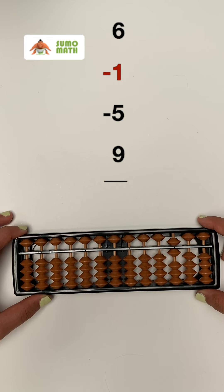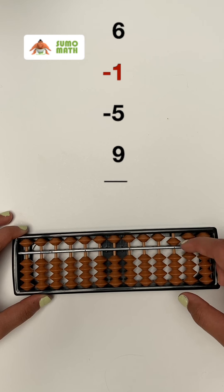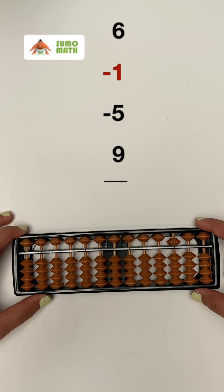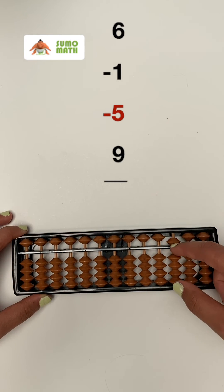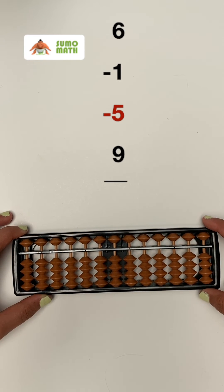Next, subtract one by moving one lower bead away from the bar, leaving five on the abacus. Subtract five by moving the five bead away from the bar, and we now have zero on the abacus.